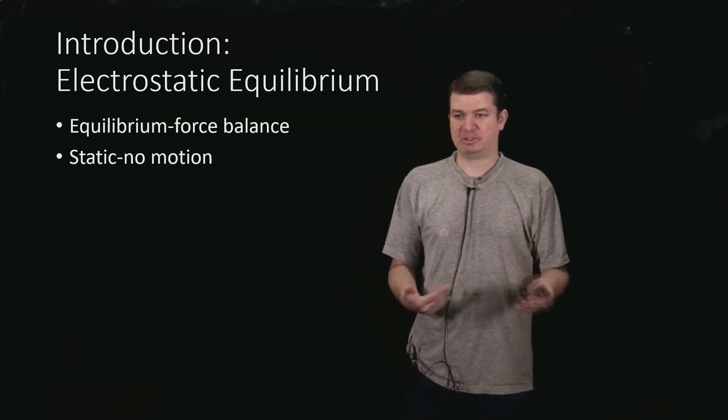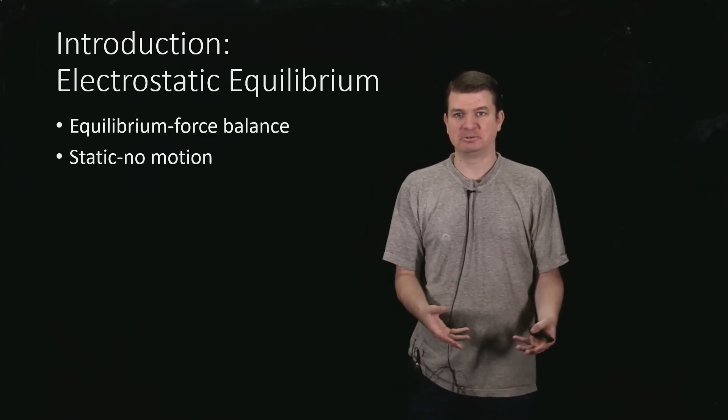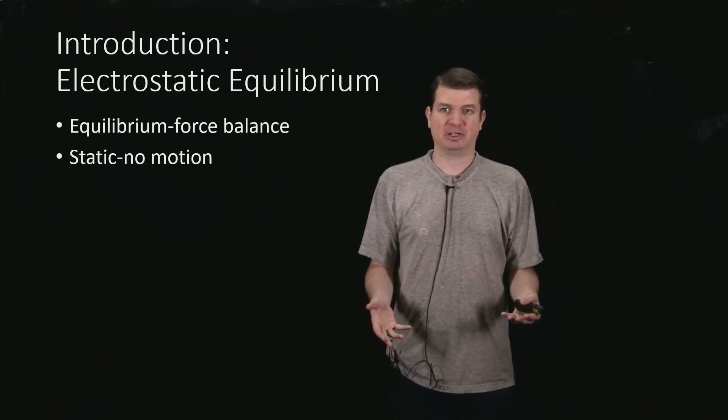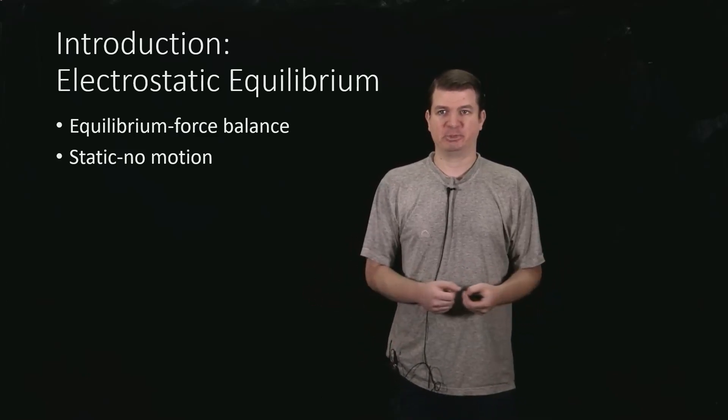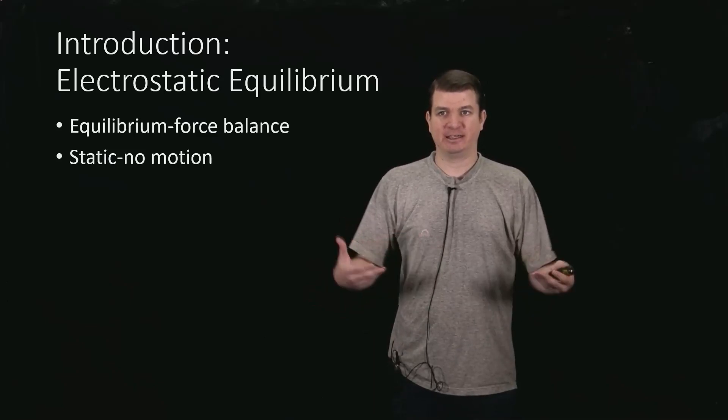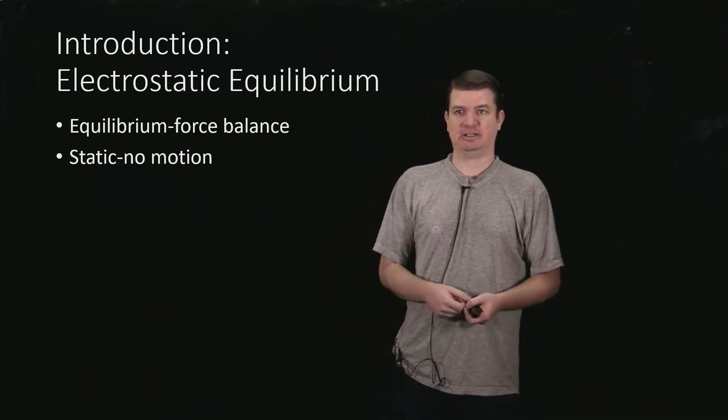What we mean there is maybe we dump some charge onto something, we let that charge move around and settle, and it will find a configuration where it's not going to move around anymore. And we're going to see a little bit about how that goes in this discussion. But once it's found that, then the charges are not moving, the forces are balanced, so we've got electrostatic equilibrium.